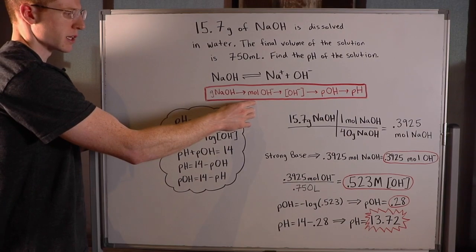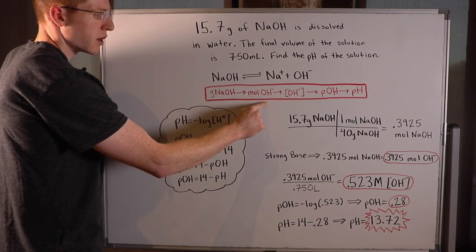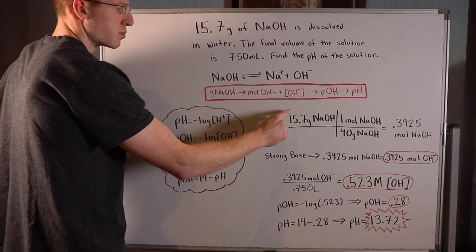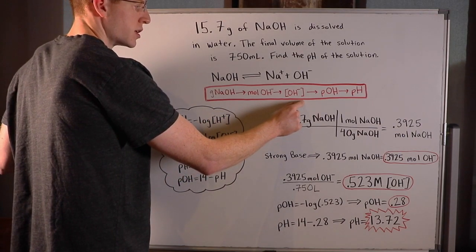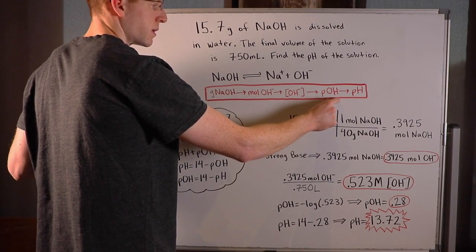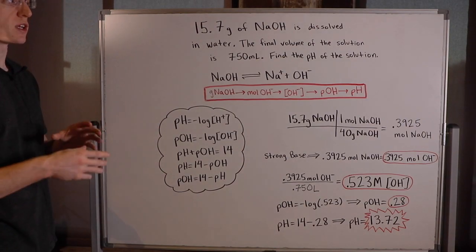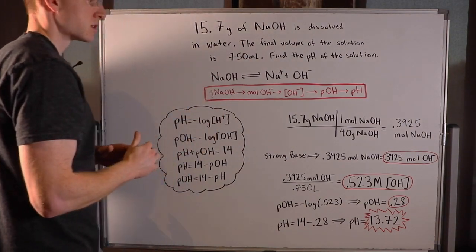It's going to be a stepwise process. First, we'll change grams of NaOH into moles of OH minus. Then we can change moles of OH minus to the concentration of OH minus. Then we can change the concentration of OH minus into pOH. Finally, we can easily convert pOH into pH, and we'll have our answer.